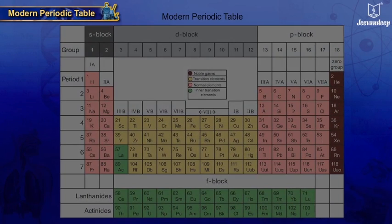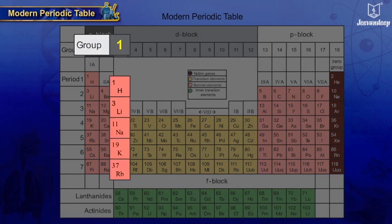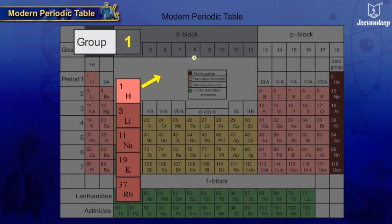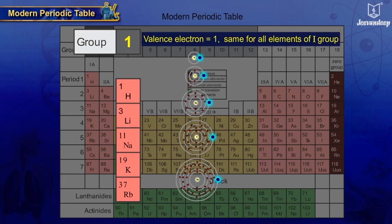There are 18 vertical columns numbered from 1 to 18 as group numbers. All the elements in a group have same electronic configuration, i.e., same number of valence electrons.